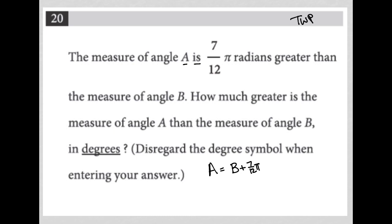How much greater is the measure of angle A than the measure of angle B? Well, we already know it's 7/12π radians greater, but this time it's asking for it in degrees. Disregard the degree symbol when entering your answer.